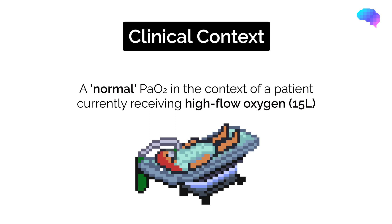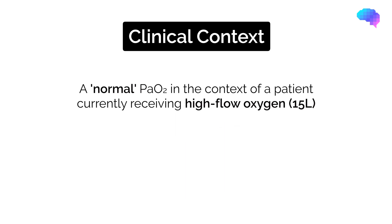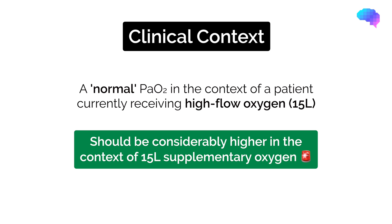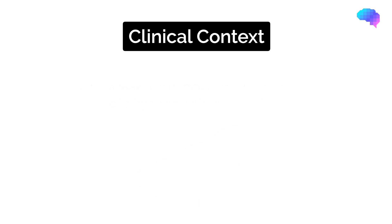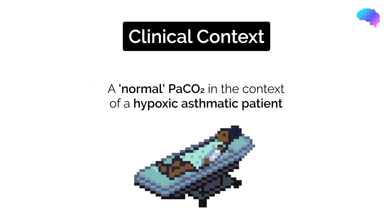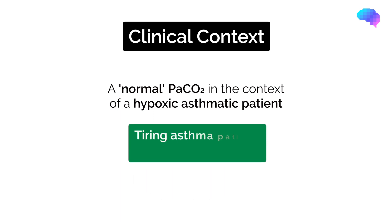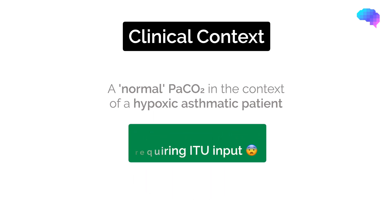A normal PaO2 in a patient on high-flow oxygen — this is abnormal, as you would expect the patient to have a PaO2 well above the normal range with this level of oxygen therapy. A normal PaCO2 in a hypoxic asthmatic patient is a sign that they are tiring and need ITU intervention.